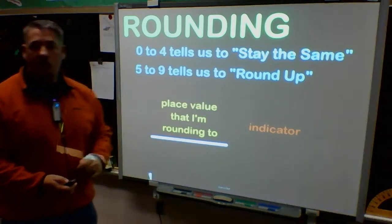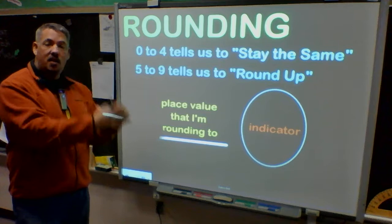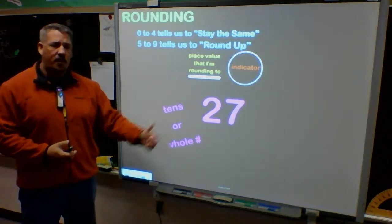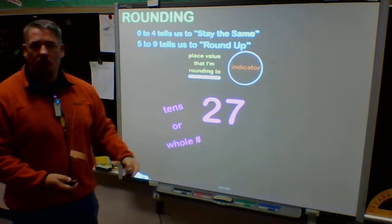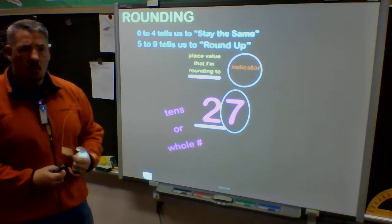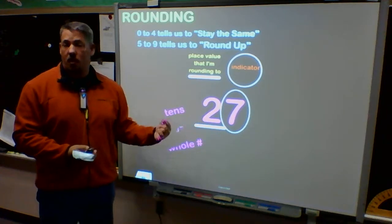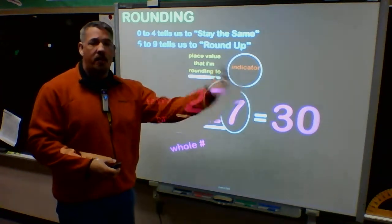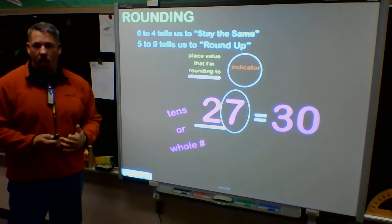We underline the place value that we're rounding to. We circle the indicator, because circling it reminds me that it becomes a zero and everything else behind it becomes a zero. For instance, if I have the number 27 and I'm told to round to the nearest tens, I underline the two and circle my indicator, which is the seven. Seven falls in the five-to-nine range, so it tells me to round up — this number goes up by one, becoming three, and everything behind it becomes a zero. So I know 27 rounds to 30.